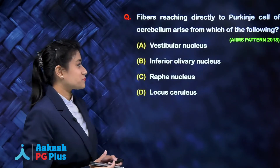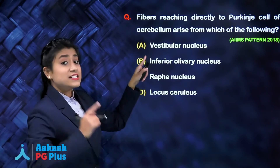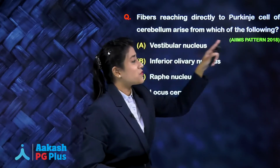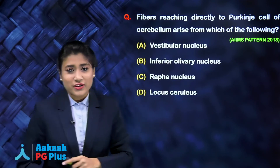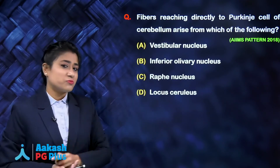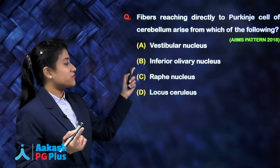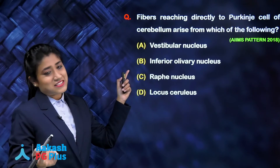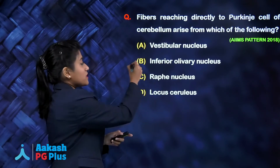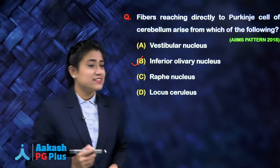Coming back to the original question: fibers reaching directly to the Purkinje cells of the cerebellum arise from which of the following? Option A: vestibular nucleus — no. Option B: inferior olivary nucleus — yes, this is the answer. The fibers carrying information from the inferior olivary nucleus to Purkinje cells are the climbing fibers.